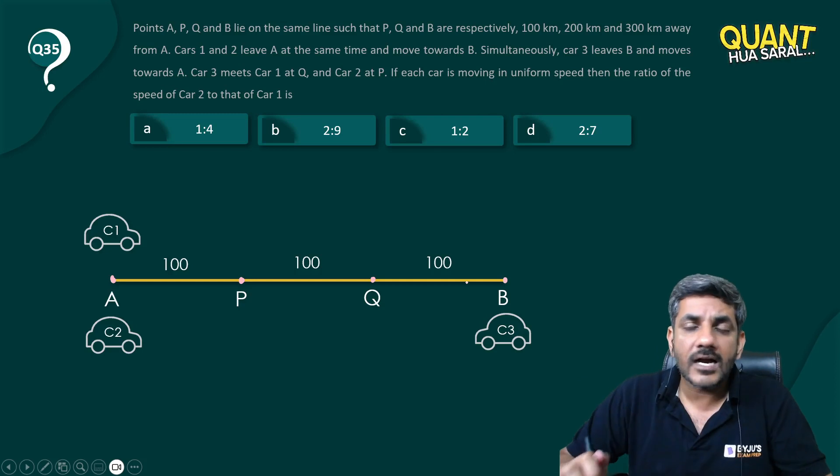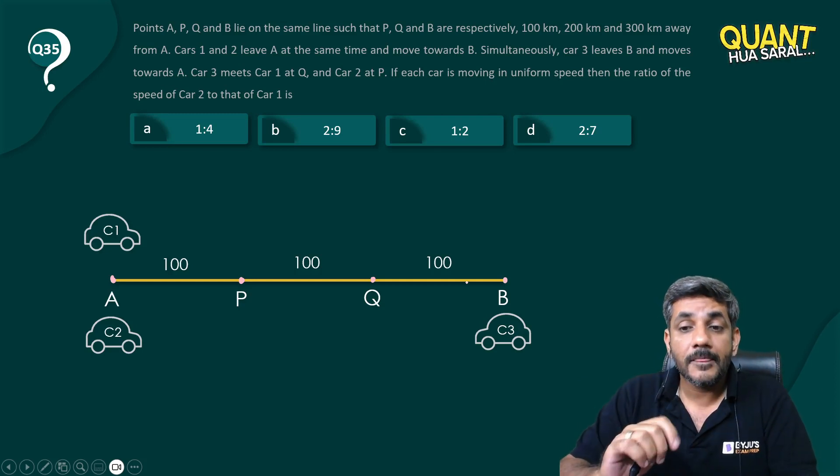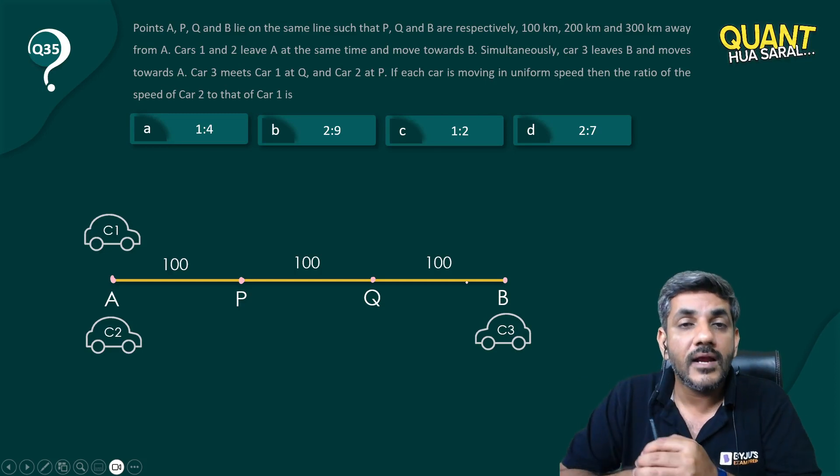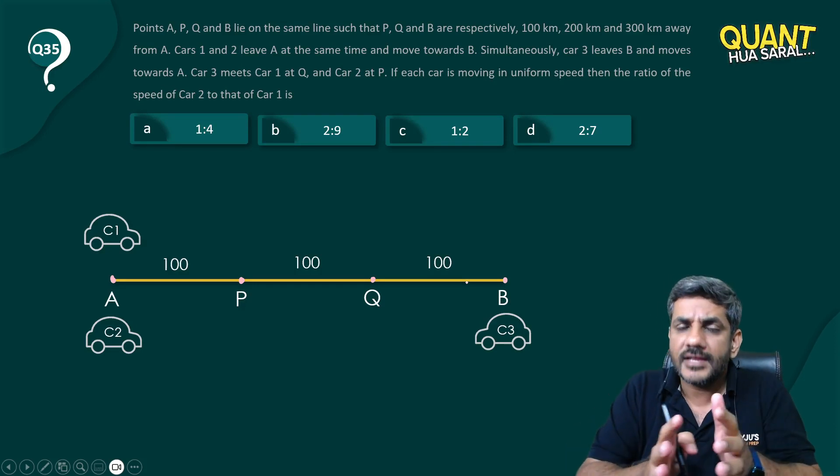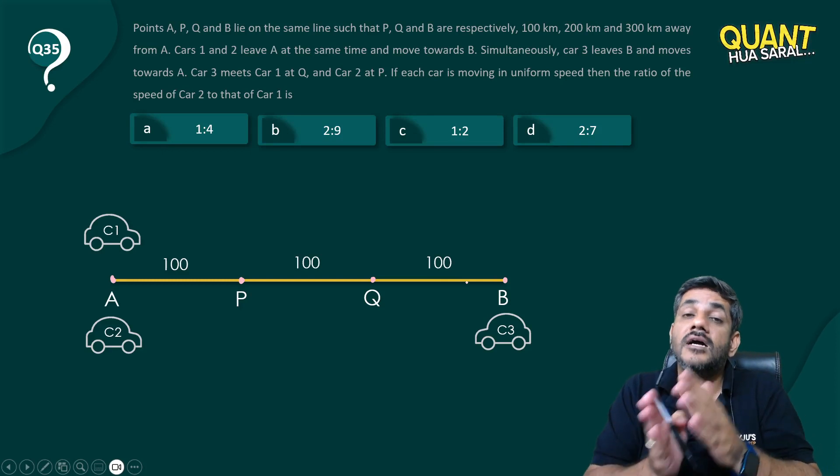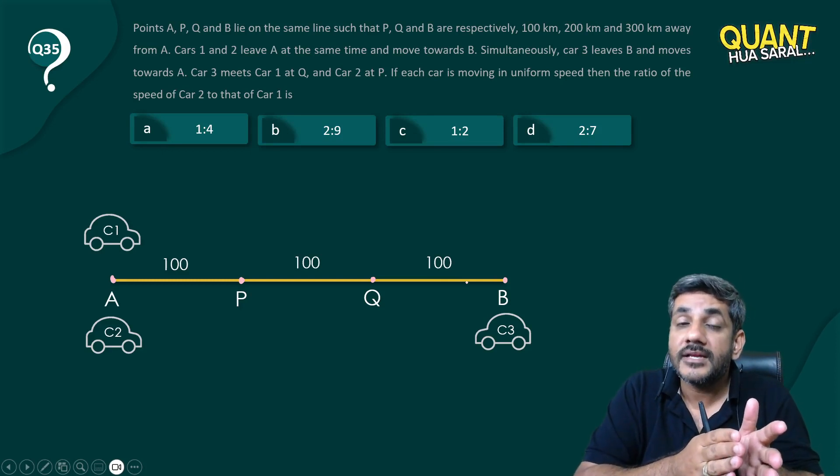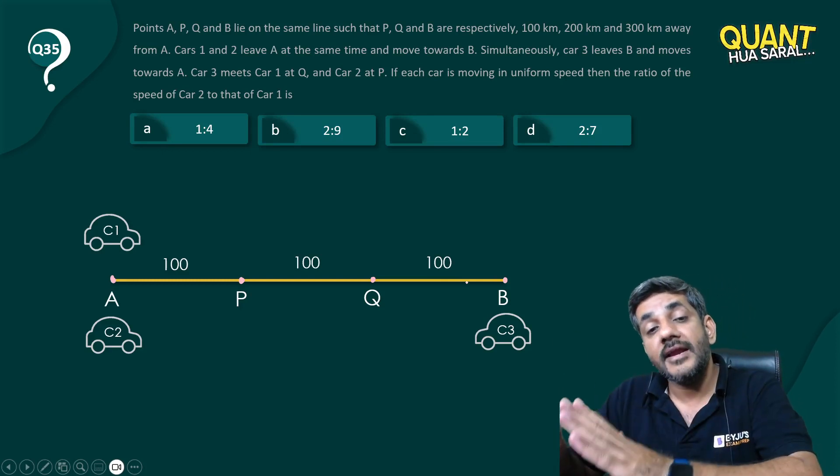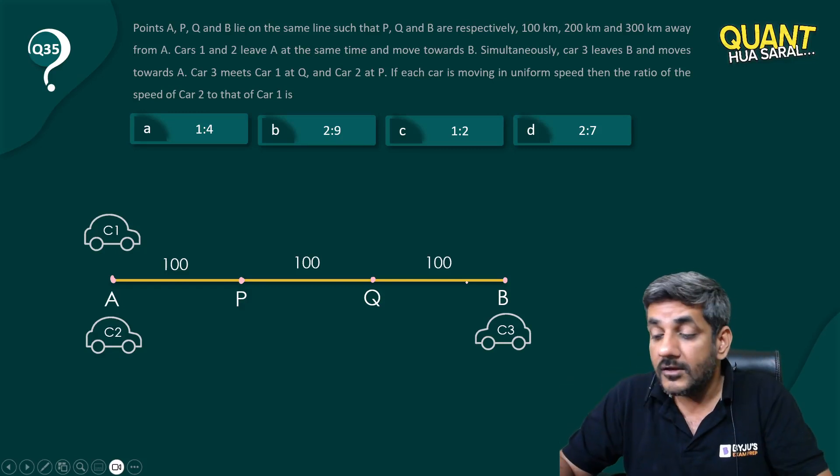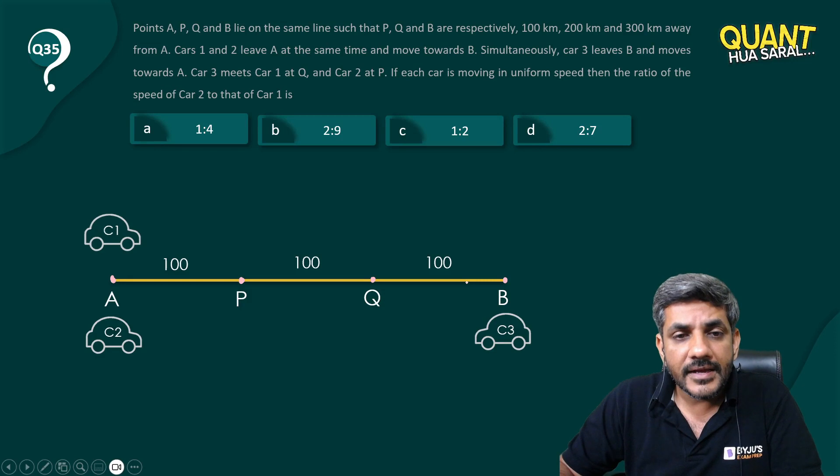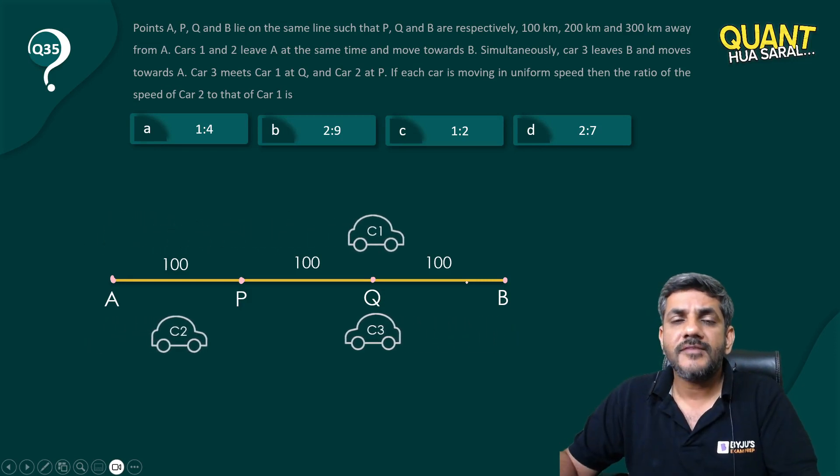They all start moving simultaneously, but car 3 meets car 1 at Q and car 3 meets car 2 at P. Car 2 is running very slow because by the time car 3 reaches P, car 1 would have already met car 3 at point Q. Car 1 moves very fast, reaches Q and meets C3 here.